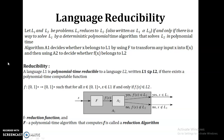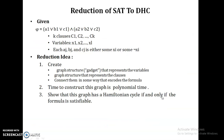The input for the SAT problem is all the variables and their values. These variables are mapped to the vertices of the graph, and if the graph produces a Hamiltonian cycle then we can say this Boolean formula produces output 1 — that is, it is satisfiable. Otherwise it will not produce a Hamiltonian cycle.